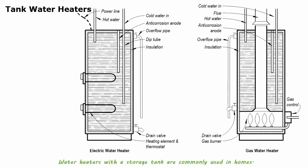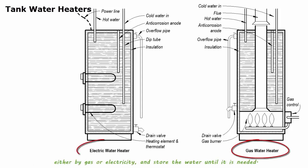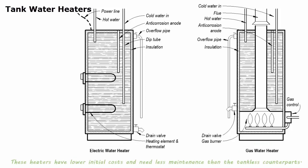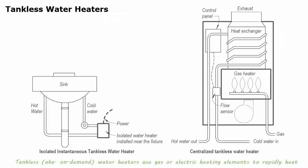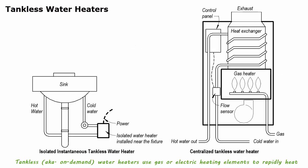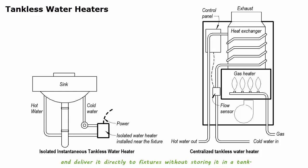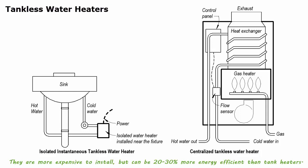Water heaters with a storage tank are commonly used in homes, featuring an insulated tank typically holding 30 to 50 gallons of water, heated by gas or electricity and stored until needed. These heaters have low initial costs and need less maintenance than tankless counterparts. The drawbacks include higher energy bills, space requirements, and shorter lifespan. Tankless, or on-demand, water heaters use gas or electric heating elements to rapidly heat water as it runs through a heat exchanger, delivering it directly to fixtures without storing it. They are more expensive to install but can be 20 to 30 percent more energy efficient than tank heaters.